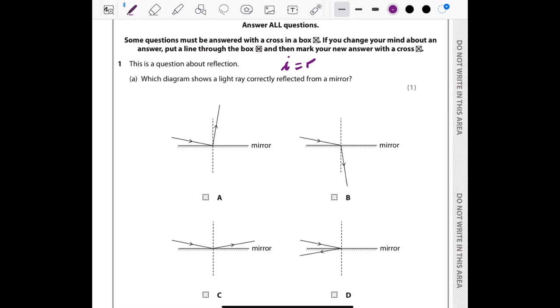The angle of incidence is the angle between the incident ray and the normal. So this one is the angle of incidence. And the angle of reflection is here, between the reflected ray and the normal.